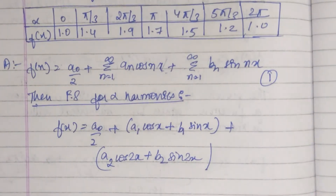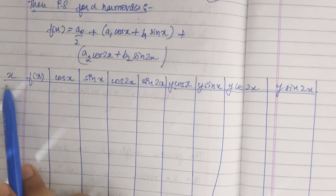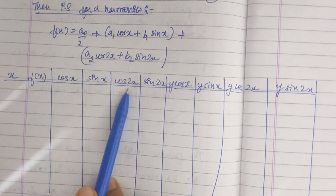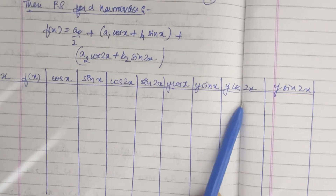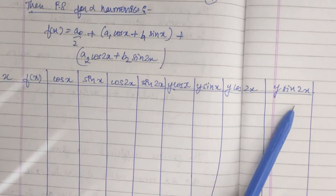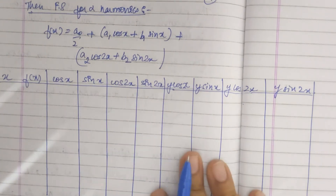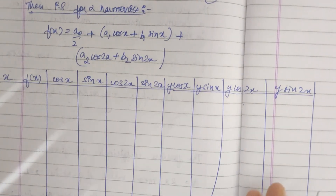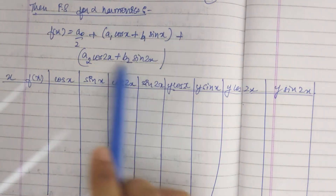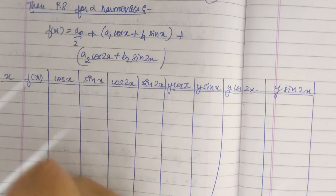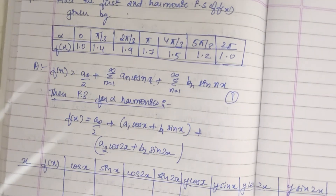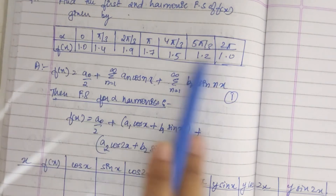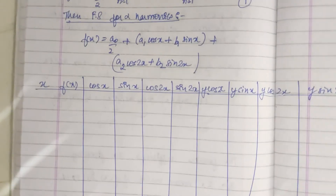We will make a table with the headings: x, f(x), cos x, sin x, cos 2x, sin 2x, y·cos x, y·sin x, y·cos 2x, y·sin 2x. If you are asked for more than two harmonics, you continue accordingly. The values given in the question's table will be placed into the x and f(x) columns.